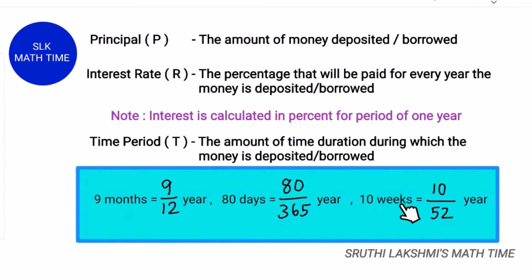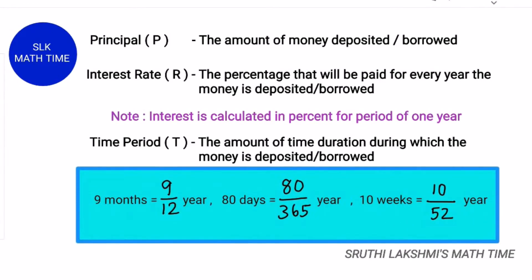For 10 weeks, there are 52 weeks in a year, so it is 10/52.